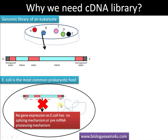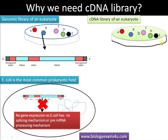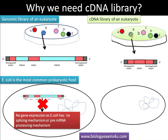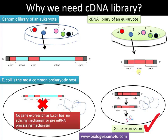There is therefore a difficulty in expressing the gene — there won't be any gene expression, as E. coli doesn't have a mechanism to splice out introns and join exons. This is a significant problem when expressing a eukaryotic gene in a prokaryotic host like bacterium. Here comes the importance of the cDNA library: in a cDNA library we have only the exons of the particular gene.